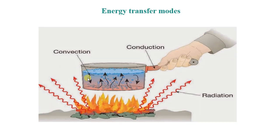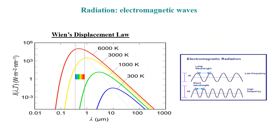How does the energy get to the sensor? There are three different energy transfer modes. The one we are interested in is radiation, because it is the only one in which the body that emits the energy and the one that receives it are not touching each other. This energy travels in the shape of electromagnetic waves, which have both wavelength and frequency — these are inversely related, so a higher frequency corresponds to a lower wavelength. A higher frequency also corresponds to a higher temperature of the body which emits the radiation.